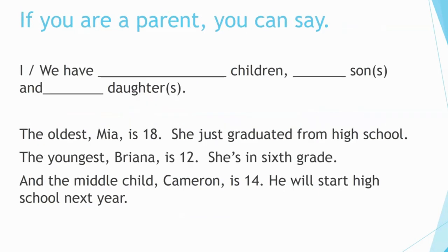If you are a parent, you can say: I or we have three children — one son and two daughters. The oldest, Mia, is 18. She just graduated from high school. The youngest, Brianna, is 12. She is in sixth grade. And the middle child, Cameron, is 14. He will start high school next year.